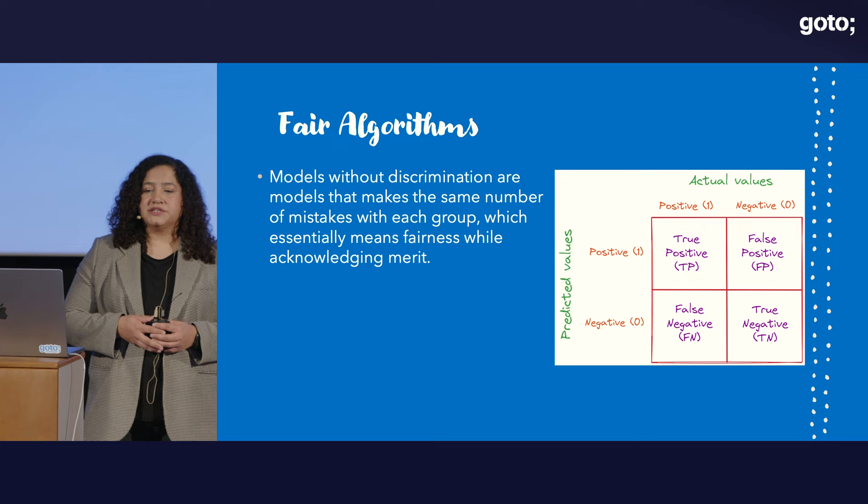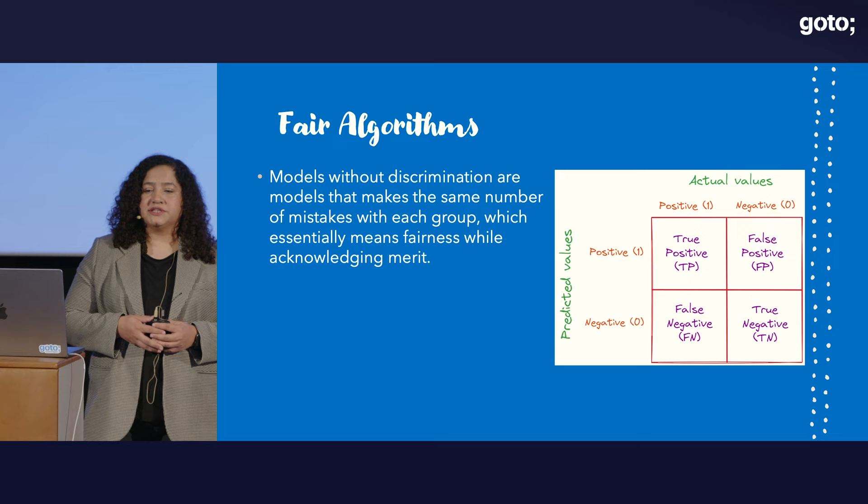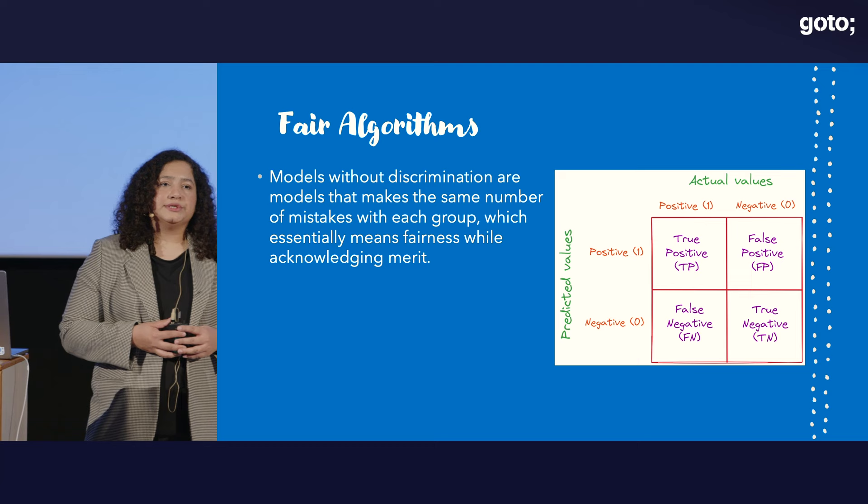Historical human biases shaped by pervasive and deeply embedded prejudice against certain groups can be reproduced and amplified in computer models. Human biases can be reinforced and perpetuated without the user's knowledge. If the data used to train the algorithm is more representative of some groups than others, the model's predictions may also be systematically worse for underrepresented groups. So we have to work towards fair algorithms.